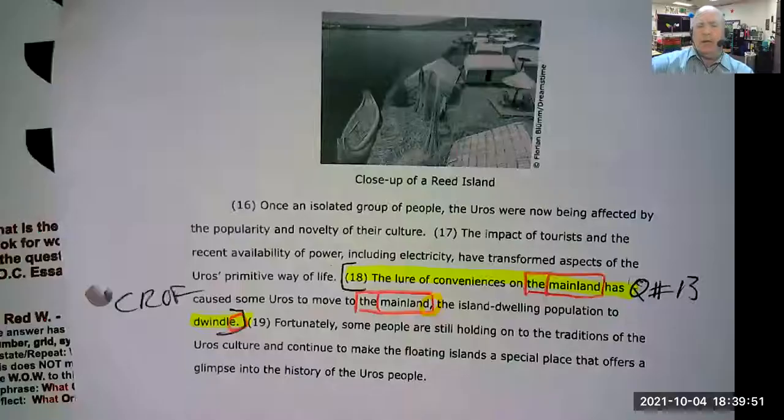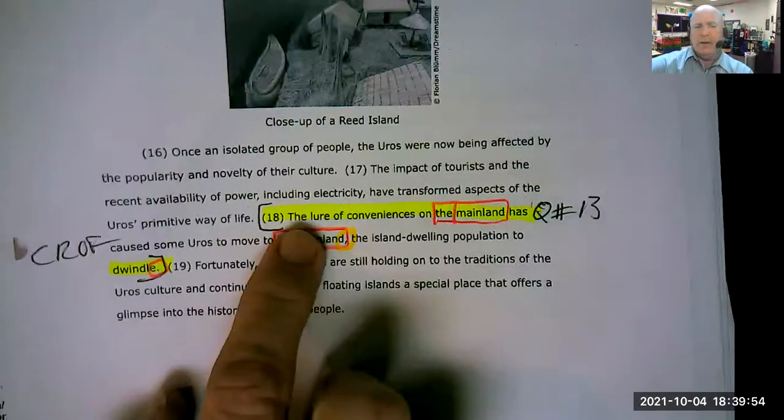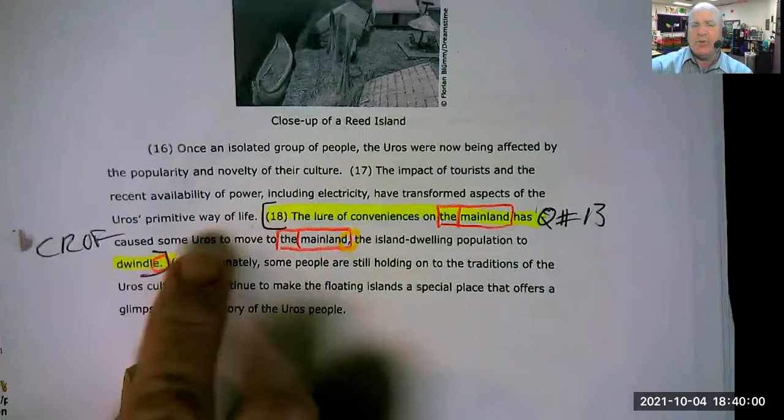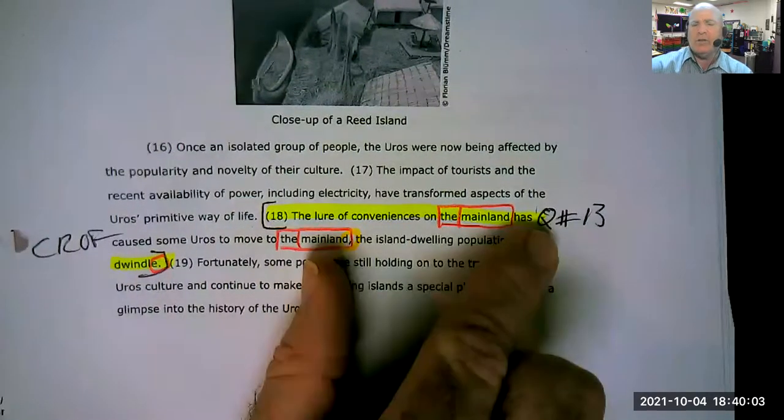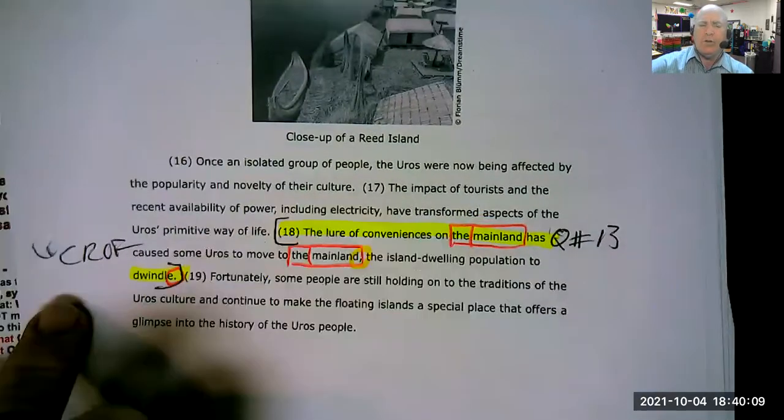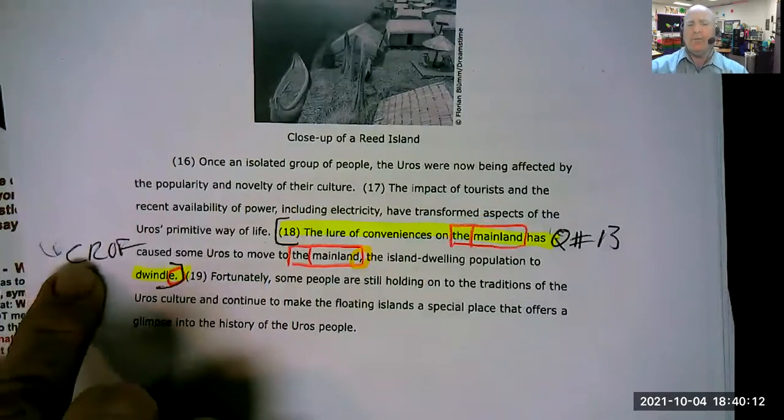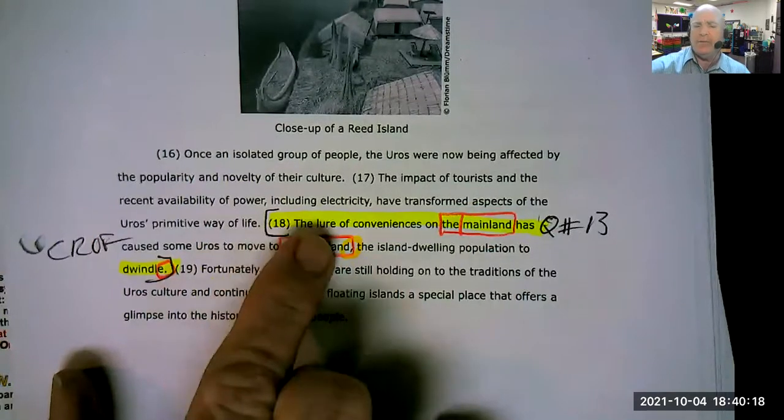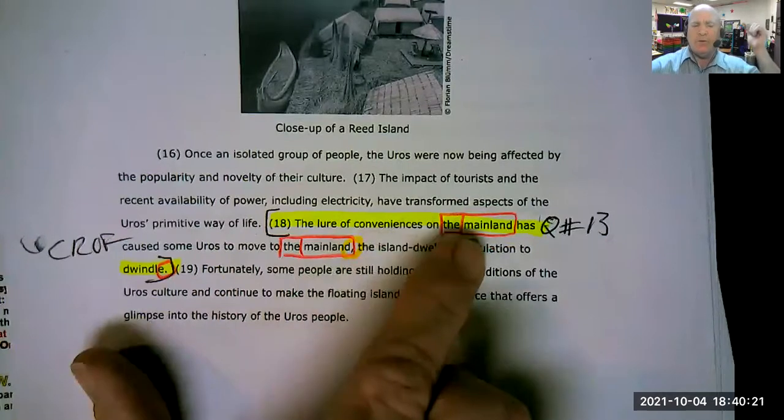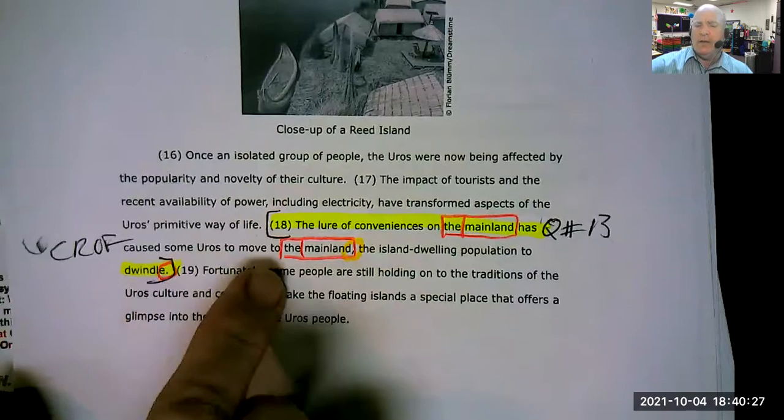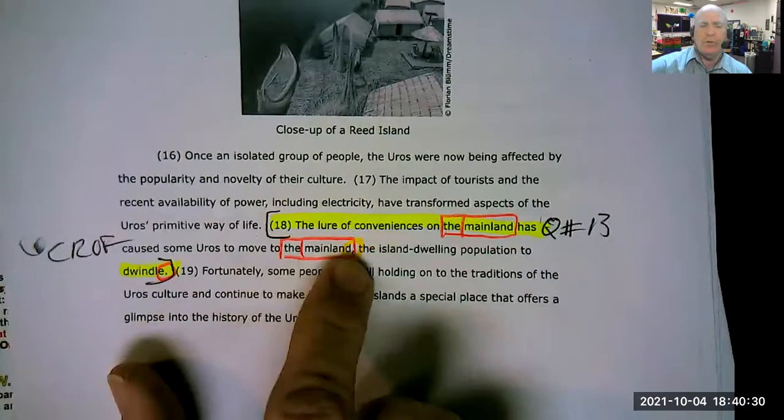I've already saved some time. And there I bracketed it, where it starts and where it ends. I've written question number 13 to make sure that I understand that question 13 is about sentence 18. And I'm going to look for a comma problem, a conjunction, a run on or a fragment. So here we go. Capital, the lure of conveniences on the mainland has caused some capital Uros to move to the mainland, comma, the island population to dwindle, period.